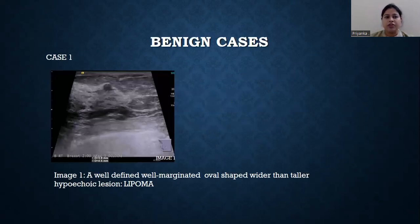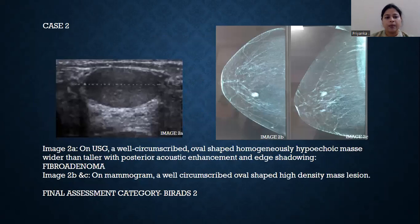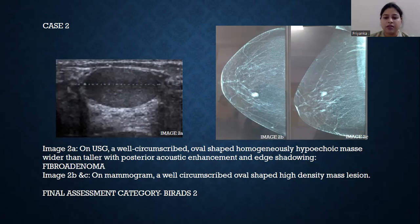Now the benign lesions. Case number 1: a well-defined, well-marginated, oval-shaped, wider than taller, hypoechoic lesion — a lipoma. Case number 2: on ultrasound, a well-circumscribed, oval-shaped, homogeneously hypoechoic mass, wider than taller, with posterior acoustic enhancement and edge shadowing. On mammogram, a well-circumscribed, oval-shaped, high-density mass lesion. It is a fibroadenoma with BI-RADS 2.